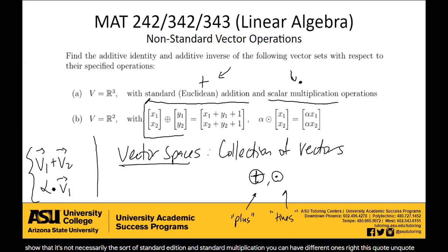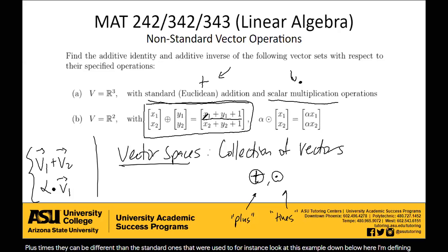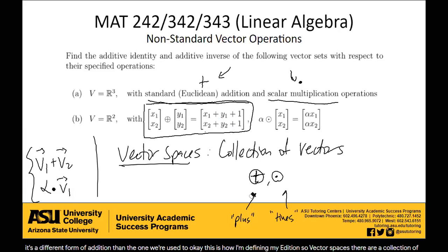For instance, look at this example. I'm defining plus in this sense to not just be adding directly — x1 plus y1, x2 plus y2 — but instead to be x1 plus y1 plus 1, and x2 plus y2 plus 1. So it's a different form of addition than the one we're used to. This is how I'm defining my addition. Vector spaces are a collection of vectors that have these two properties: this additive and scalar multiplicative operation.